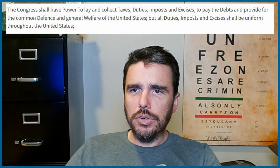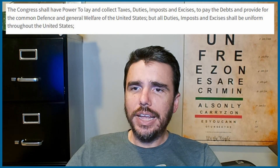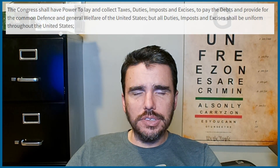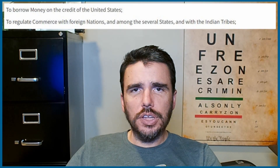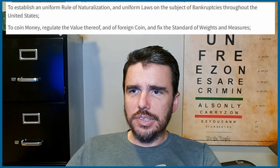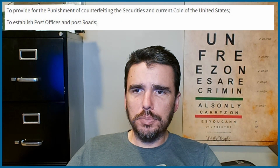Section Eight is the real meat and potatoes of Article One. Congress shall have the power to lay and collect taxes, duties, imposts, and excises — but all duties and excises shall be uniform throughout the states, so taxes cannot be higher in one state versus another. Congress also has the power to borrow money on the nation's credit, to regulate commerce with foreign nations and between states — that's the famous Commerce Clause — to establish rules of naturalization, bankruptcy, and to coin and regulate the value of money.